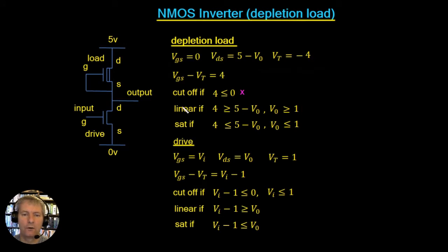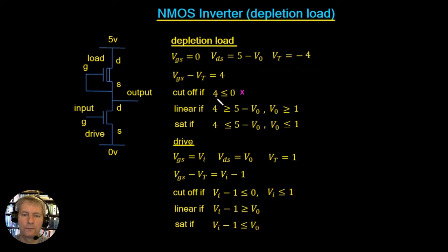We can check cutoff, linear, and saturation. It's cut off if VGS minus VT is less than or equal to zero — but four is not less than or equal to zero, so this device is never cut off. It's in the linear region if VGS minus VT is greater than or equal to VDS, which is five minus V_out. Transposing, it's in the linear region if the output voltage rises up to one volt, and in saturation if the output voltage is less than or equal to one volt.